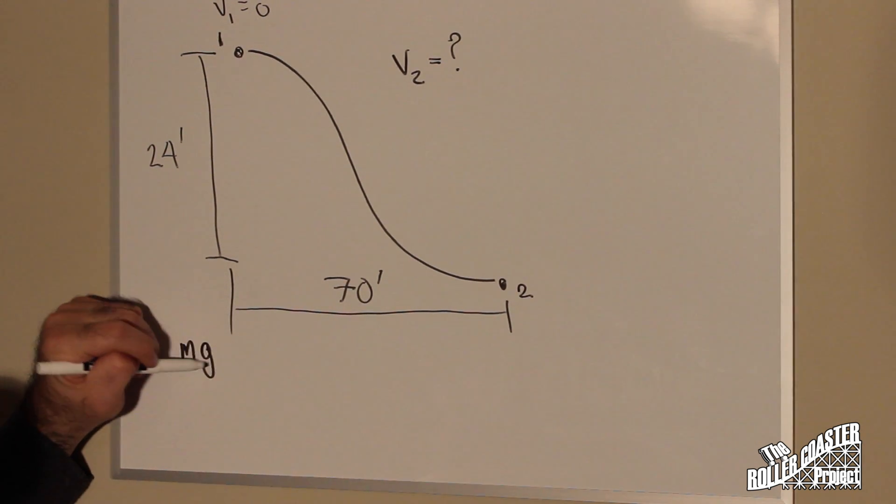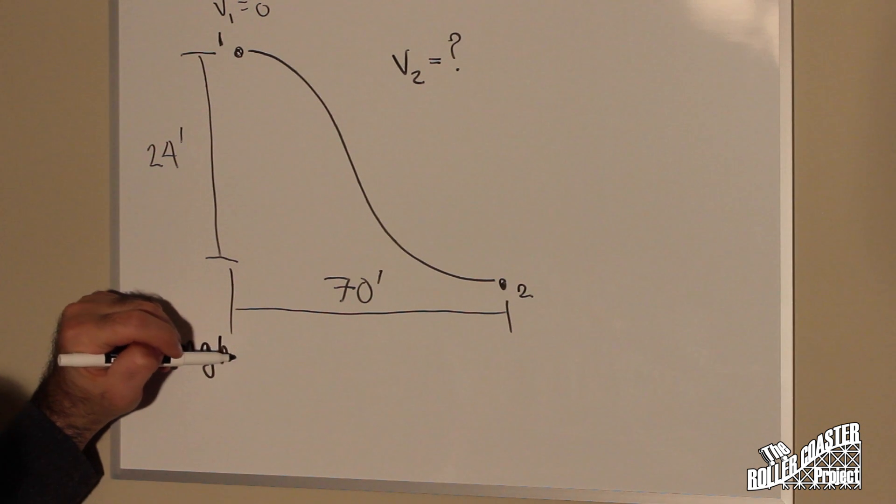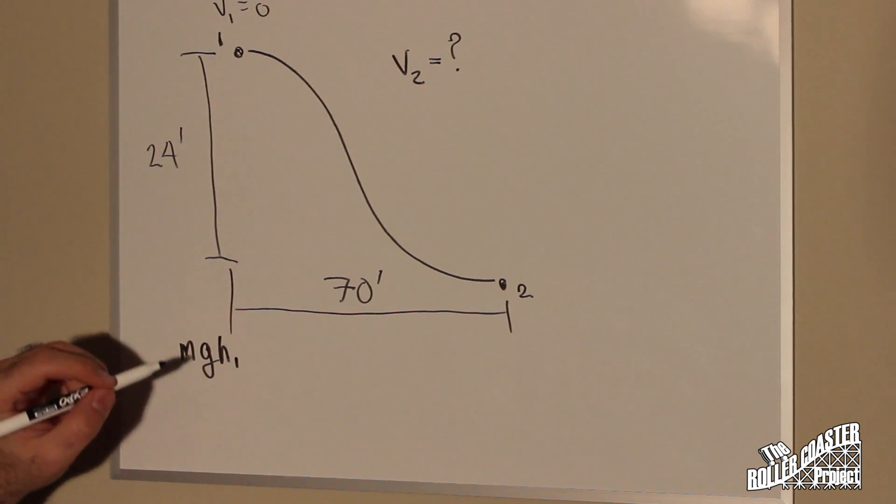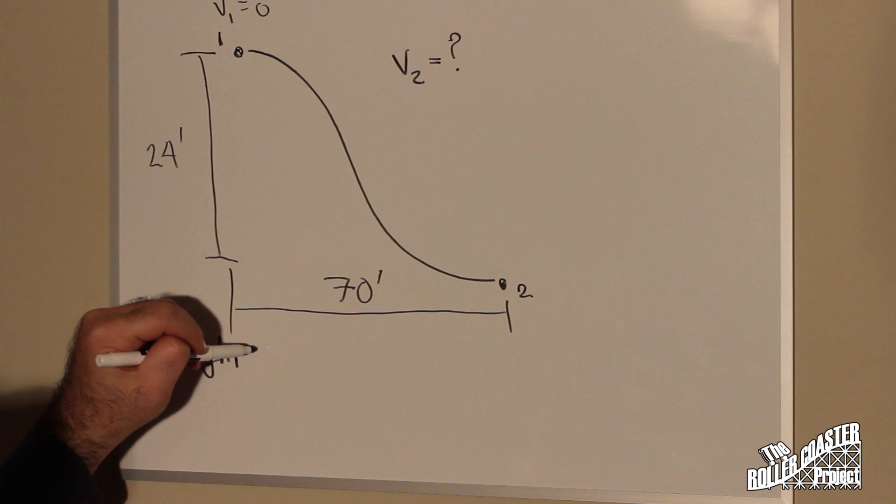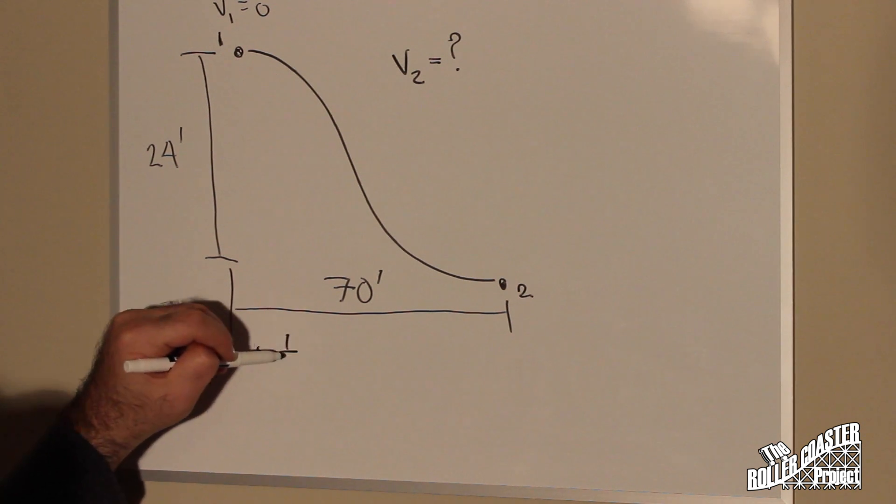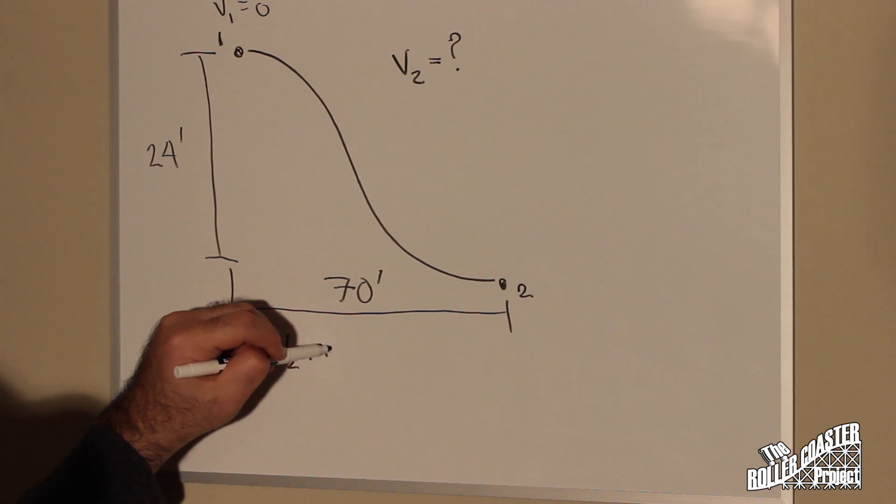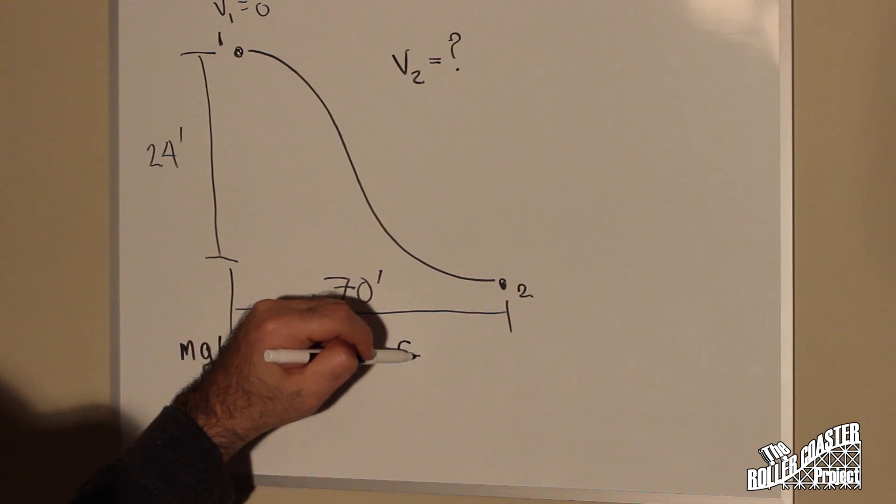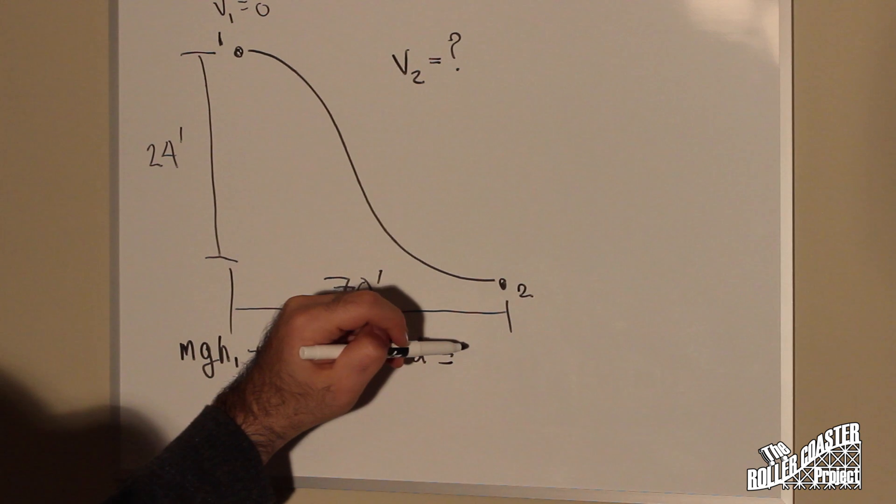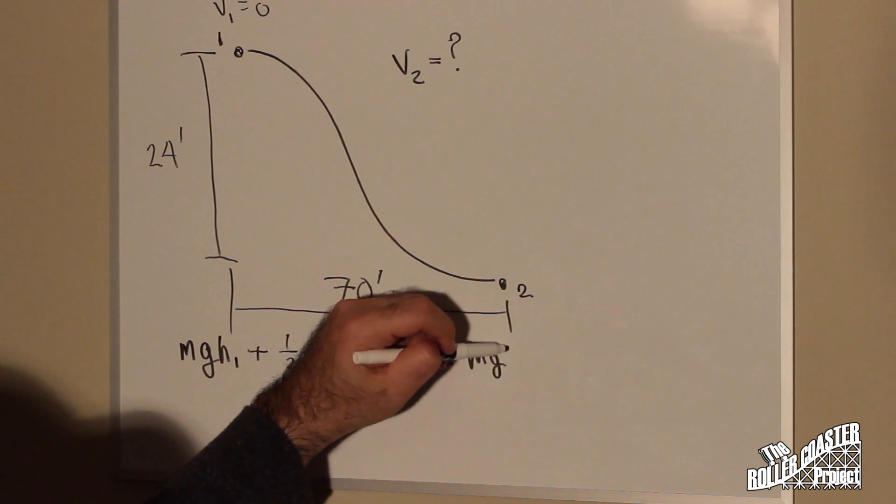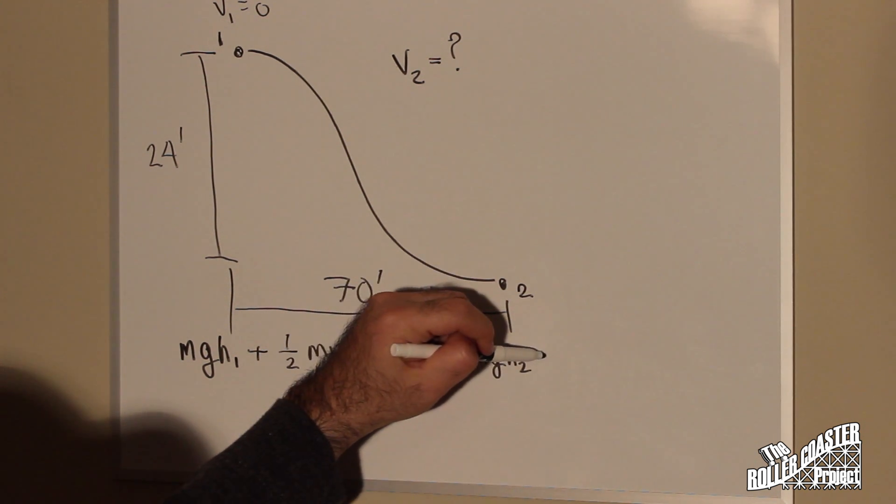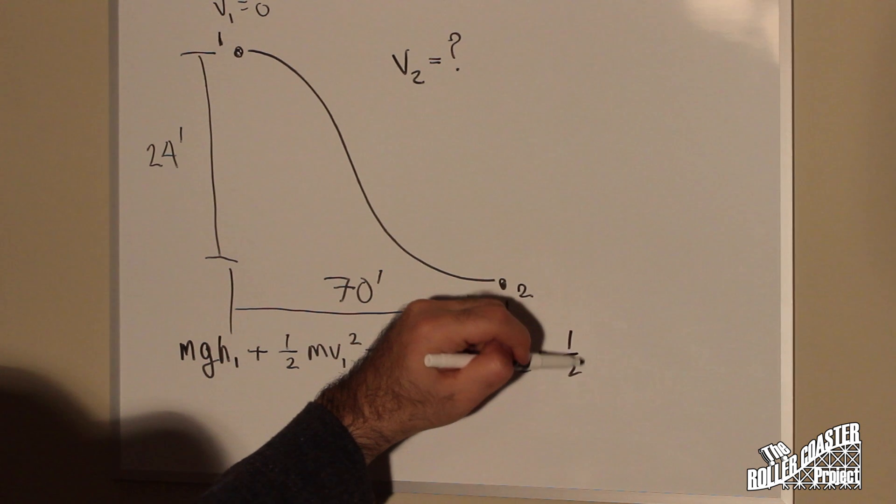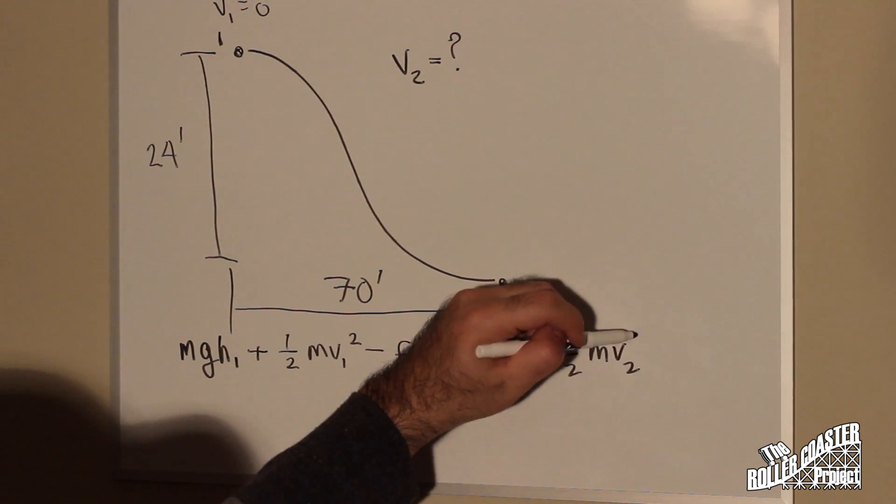So now we decided to expand potential energy. So that's mass times gravity times our initial height plus one half the mass times our initial velocity squared minus our friction times distance is equal to our second potential energy.